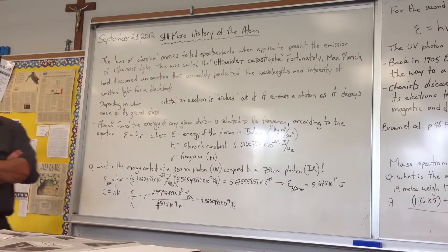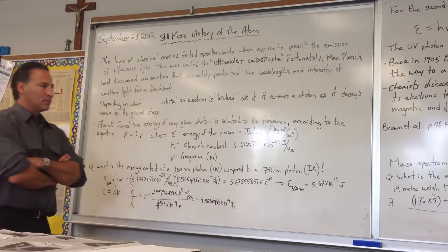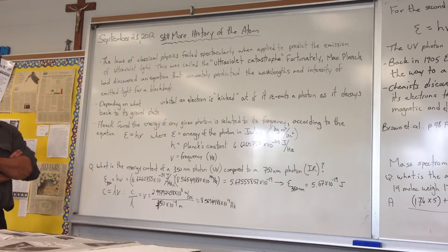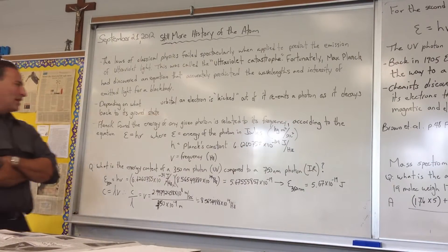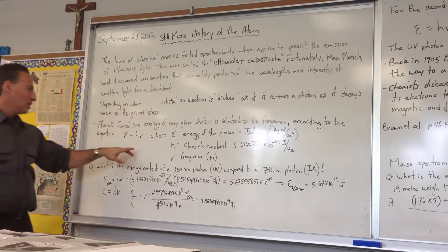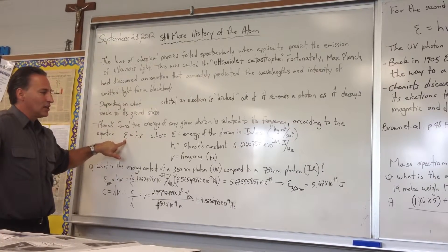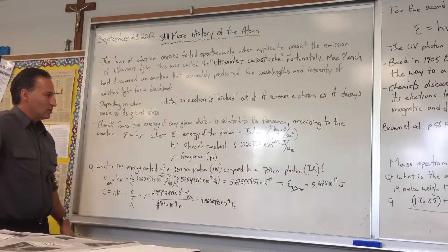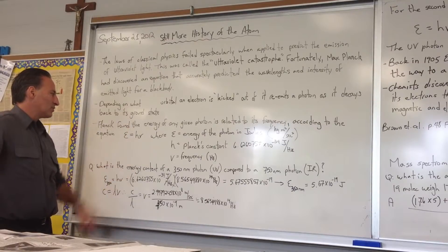Once scientists made this quantum leap in thinking, they were able to start developing tenable explanations for why, for example, hydrogen had a spectrum with four lines in it and why the lines were of a certain color. Max Planck found that the energy of any given photon is related to its frequency according to the equation E = hν, where ν is the frequency of the radiation, h is Planck's constant, and E is the energy in joules. You can find out the energy content of any single photon if you know its frequency.